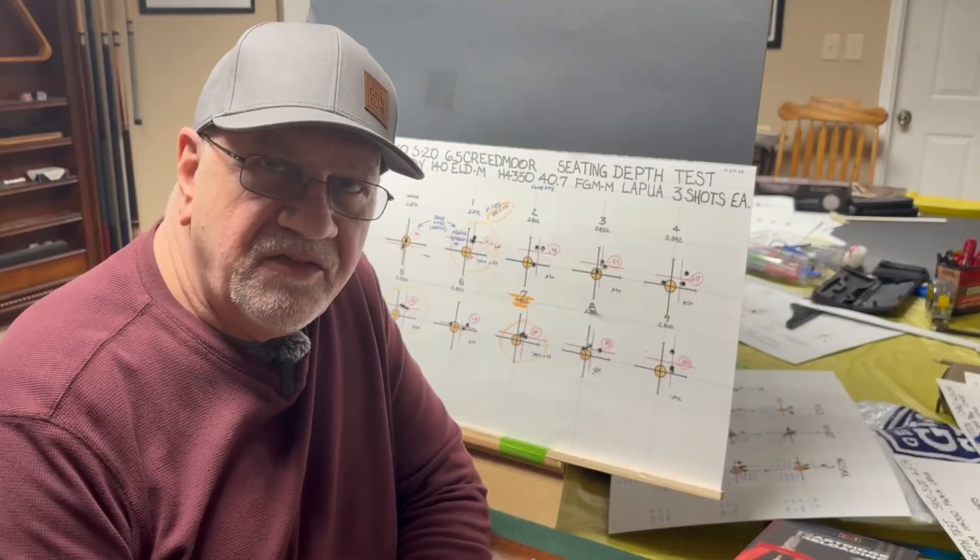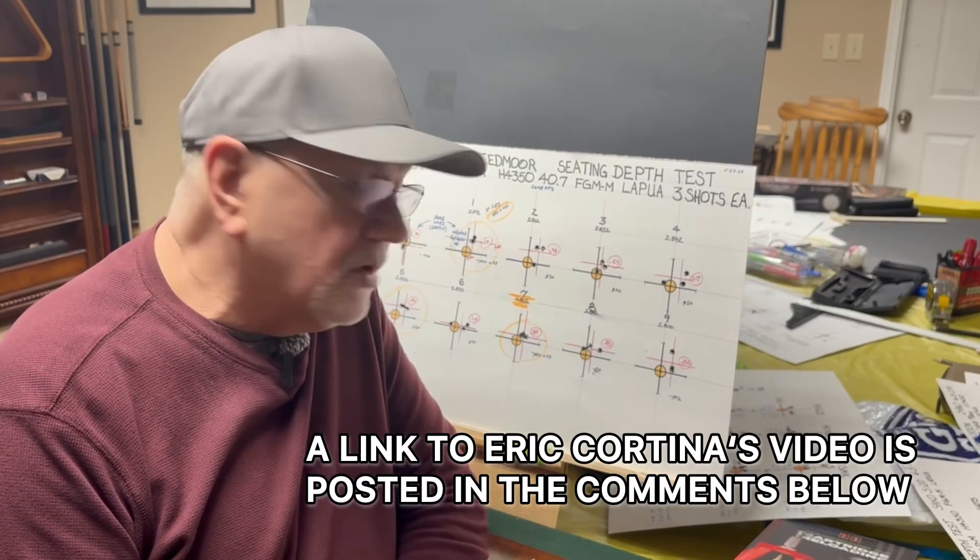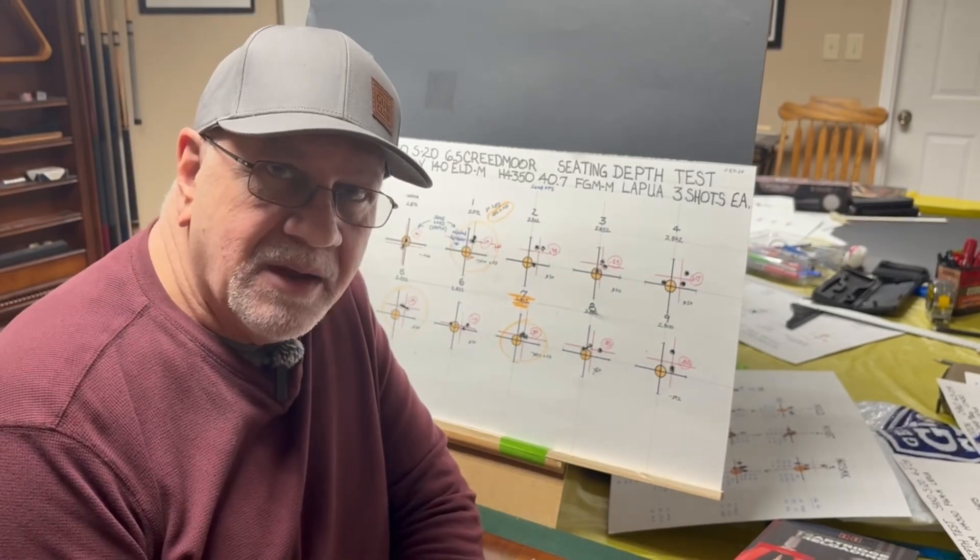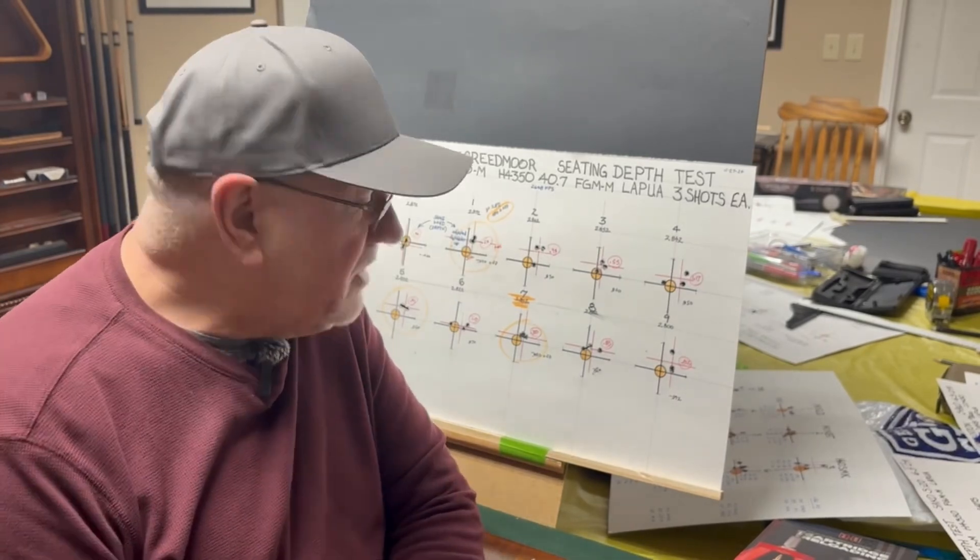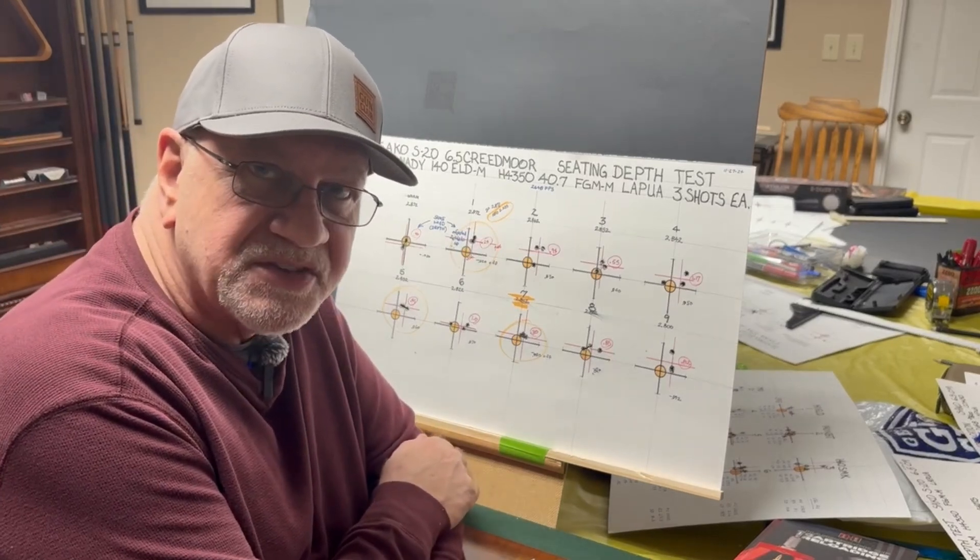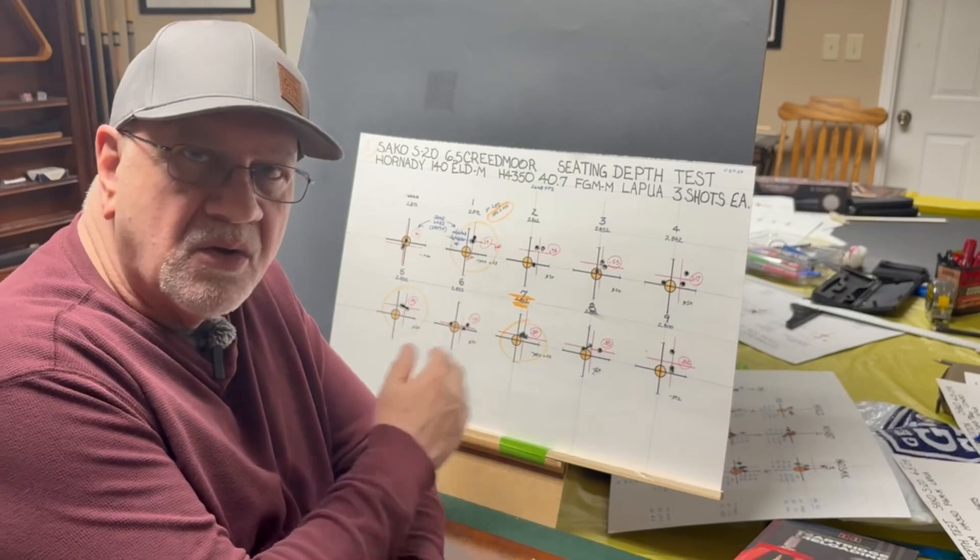It started off with watching a video by Eric Cortina titled Chasing the Lands is Stupid or something like that, I think. But he talked about doing a seating depth test, which I have done. So, what I did is I decided to do increments of 10 thousandths and then I came back where it looked pretty good and I zeroed in on either side of that.